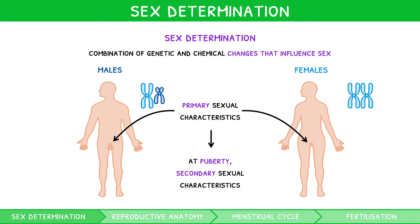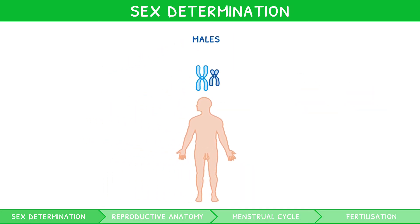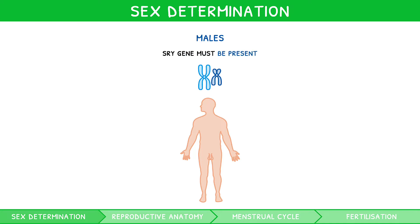Whilst you do not need to define sex determination for your exam, you must be comfortable with the process for males and females. For a zygote to develop into a male, the SRY gene located on the Y chromosome must be present. It codes for the DNA binding protein TDF,